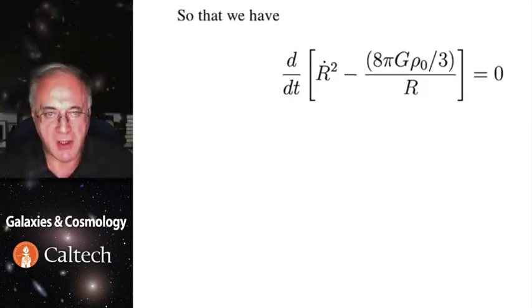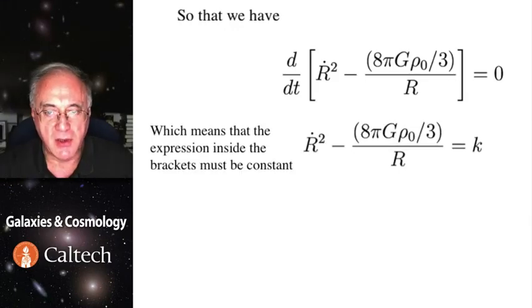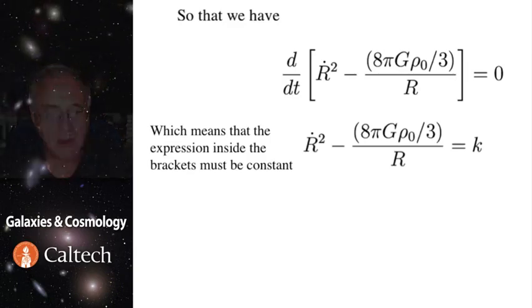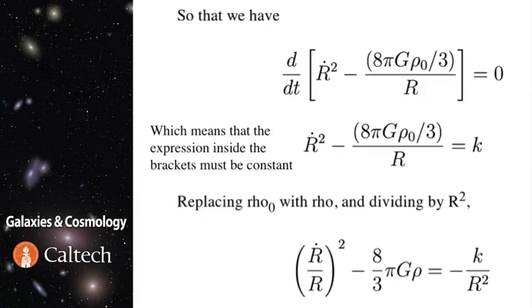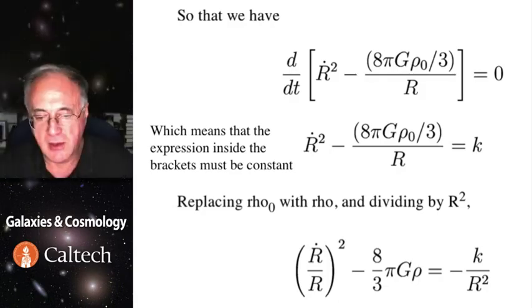And we have an interesting simple differential equation, which says the time derivative of this thing in brackets is actually zero. And therefore, the thing in brackets must be constant. So let's call it k. Turns out that's the curvature constant. Now if we replace present-day density ρ₀ with general density at any given time ρ, scaling by the appropriate scale factor and divide by r squared, we get the following equation. That looks simpler. That, in fact, is the Friedmann equation in the absence of the cosmological constant.